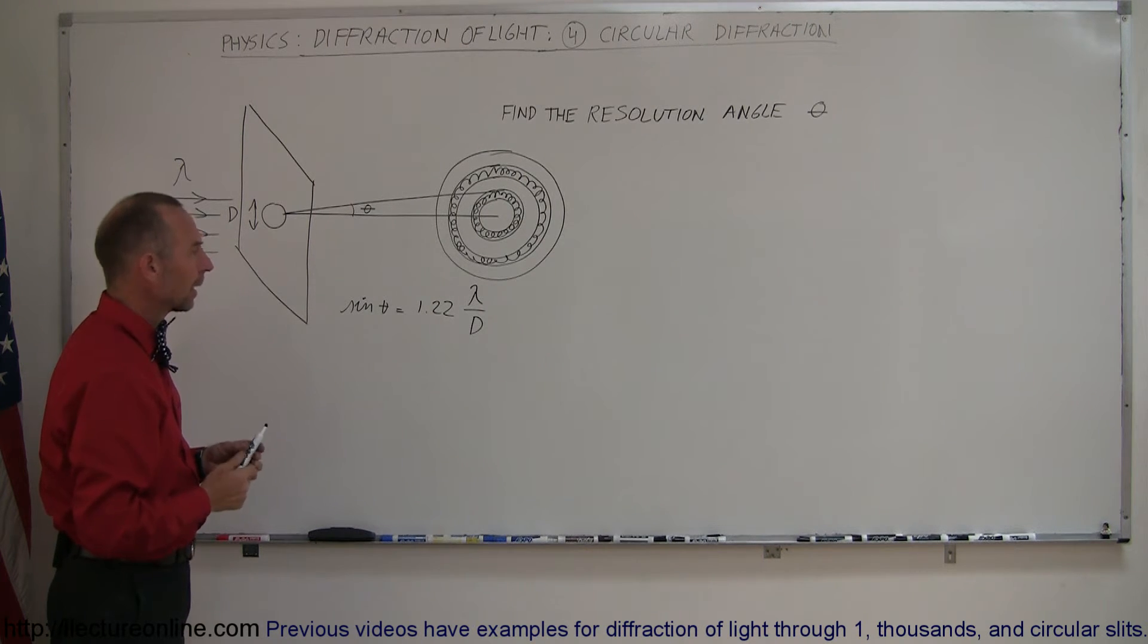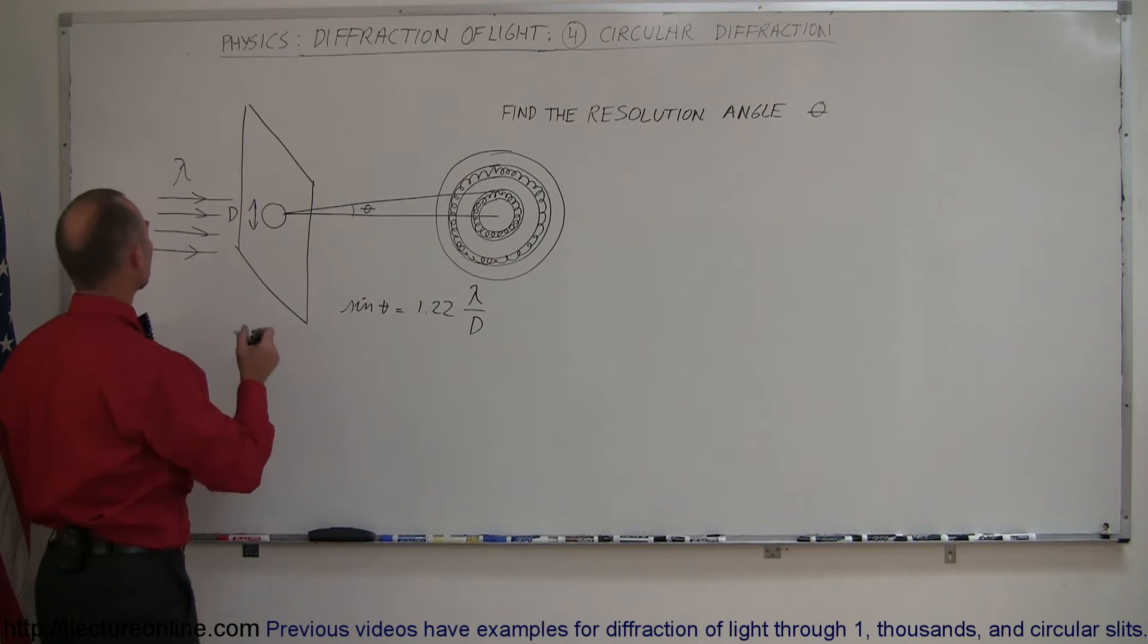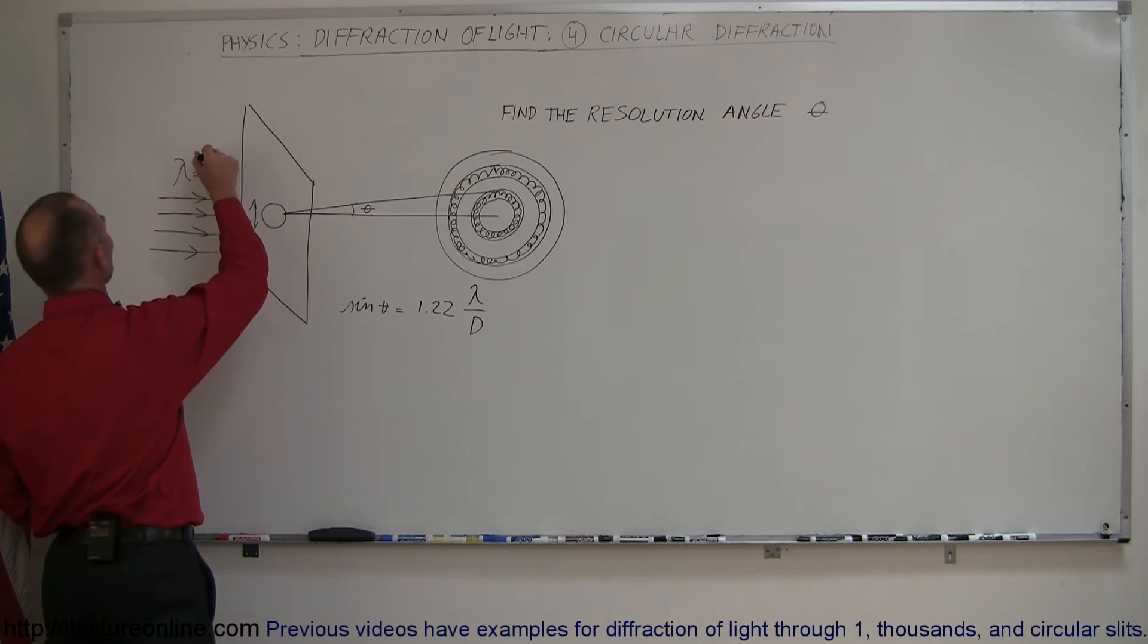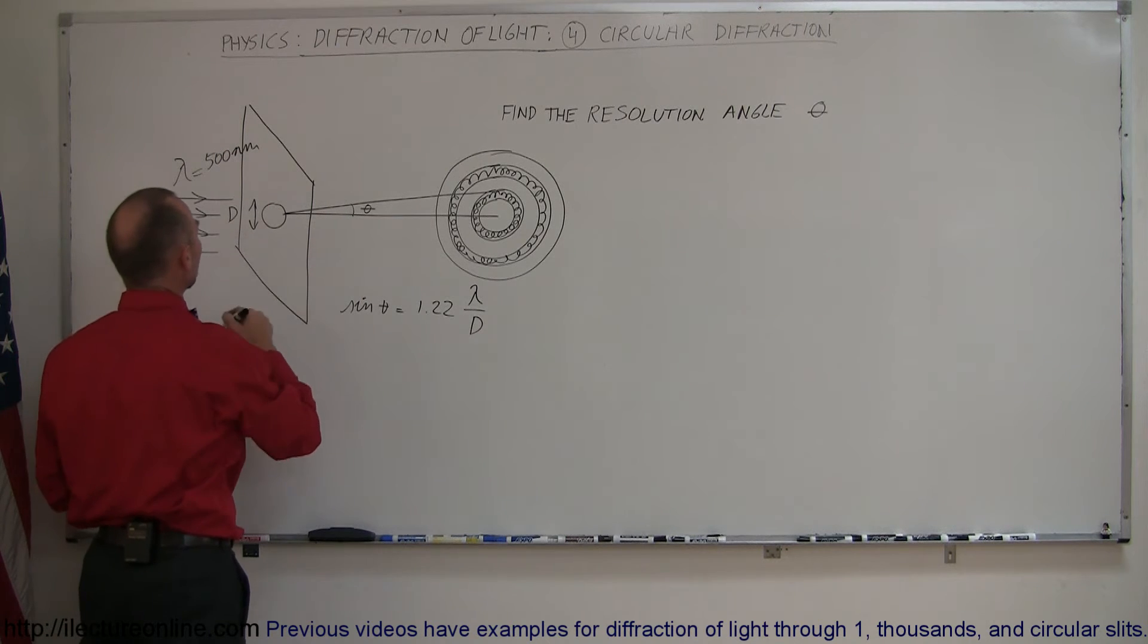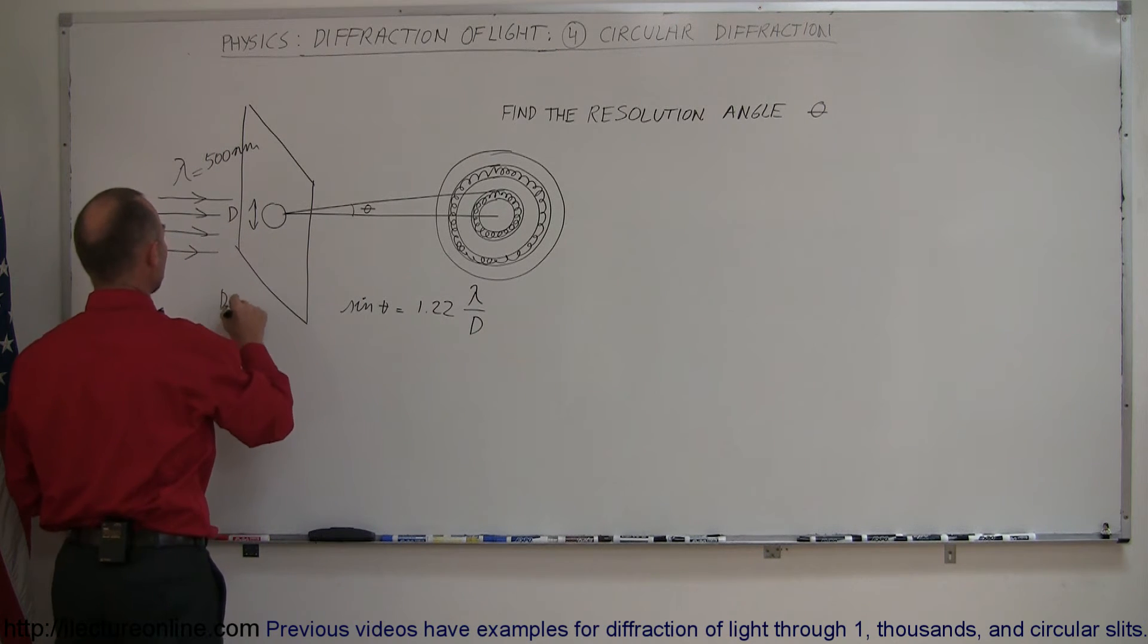Then, how do we find the angle resolution when the wavelength is the typical wavelength for visible light, which is 500 nanometers? Let's say the opening here is D equals 4 millimeters.